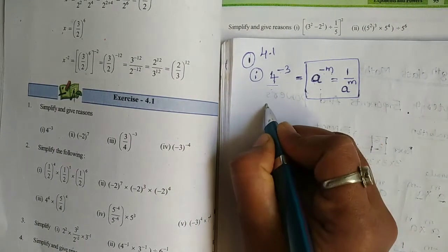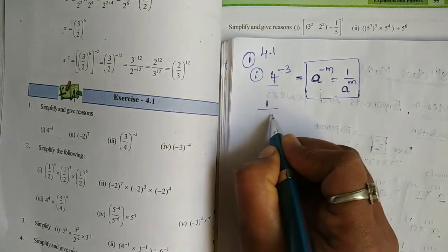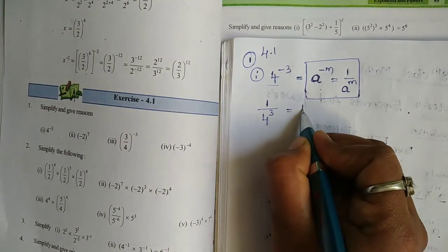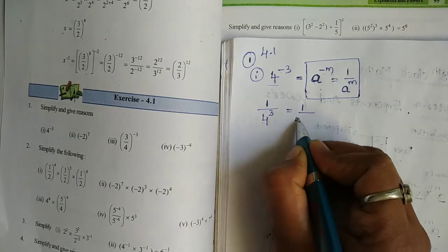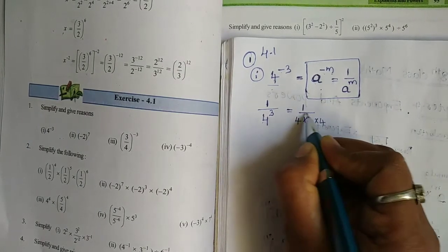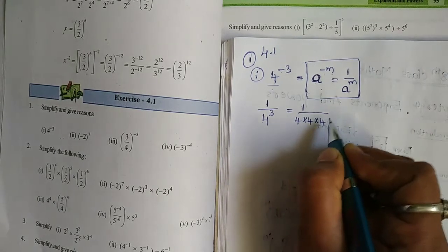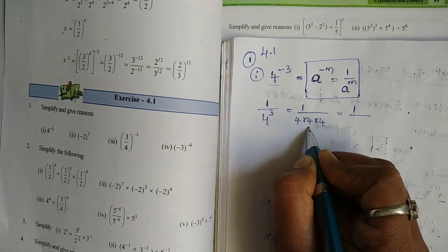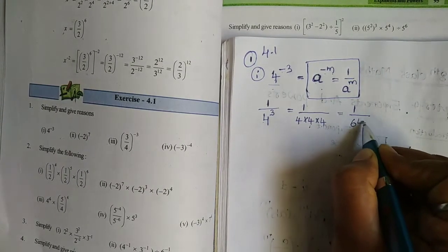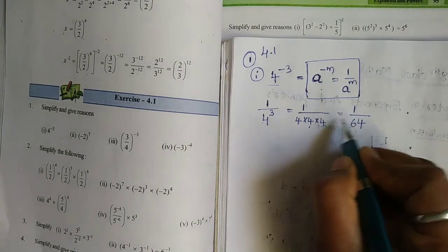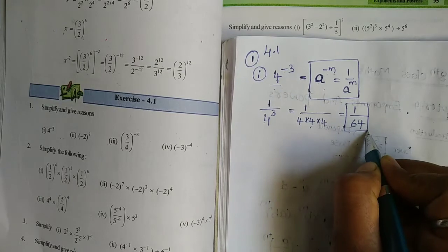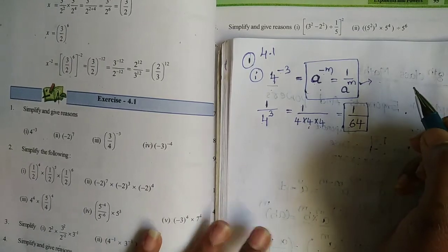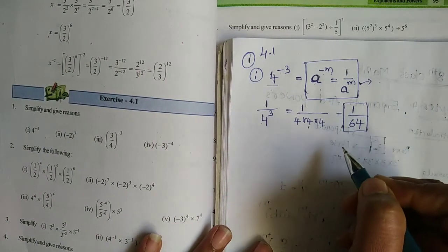So, 4 to the power of minus 3 equals 1 by 4 into 4 into 4. Now, 4 into 4 is 16, and 16 into 4 is 64. So our answer is 1 by 64. The reason is we applied the formula a to the power of minus m equals 1 by a to the power of m.